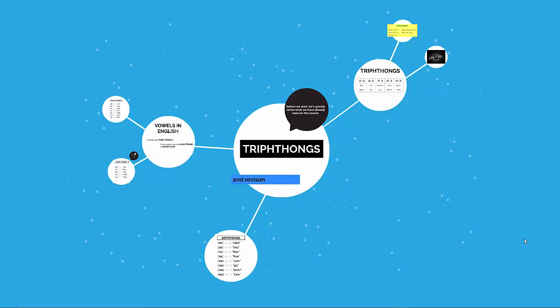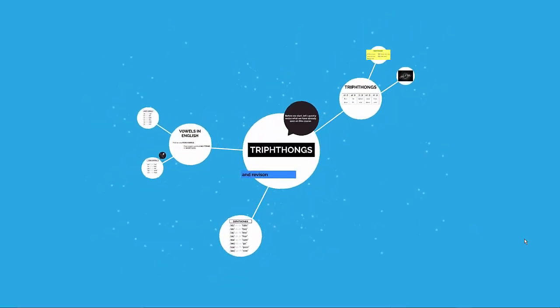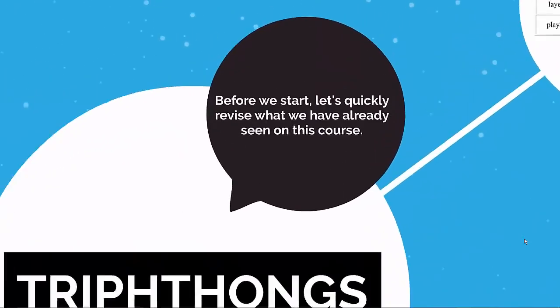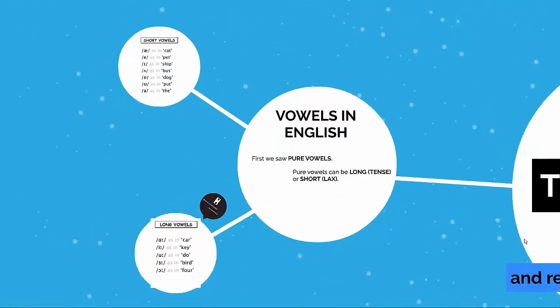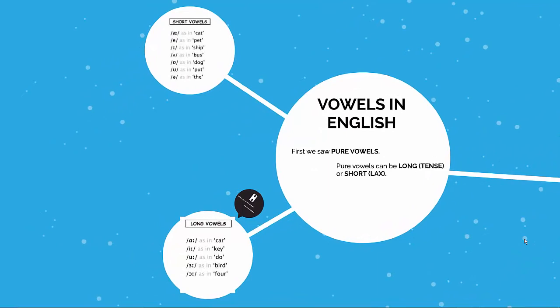So before we start, let us just look quickly at what we have already seen on this course. You have seen other vowels in English. We started with pure vowels. You already know that pure vowels can be long or short.